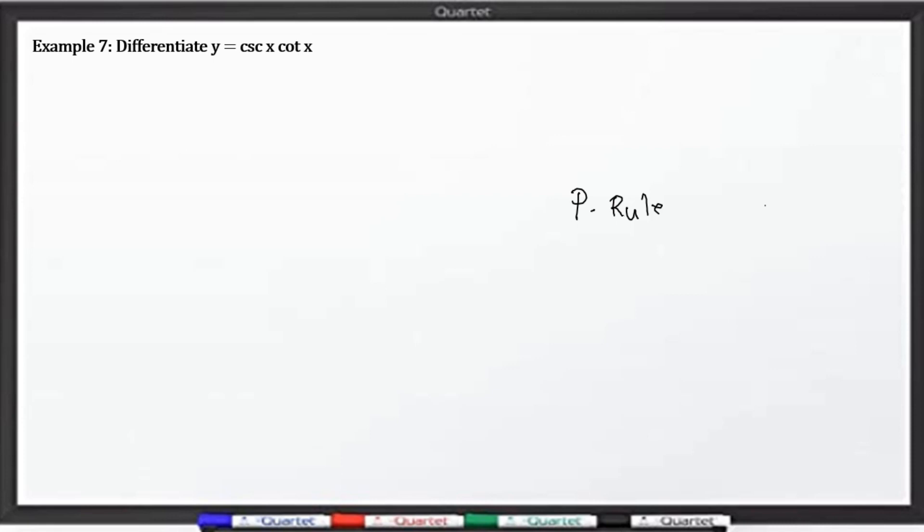To get the derivative, first you have to copy. Kung ito po daw yung inside natin, inside at ito yung outside. Ang sabi po natin, inside times the derivative of the outside plus the outside times the derivative of the inside. So yan po yung ating susundan na pattern.